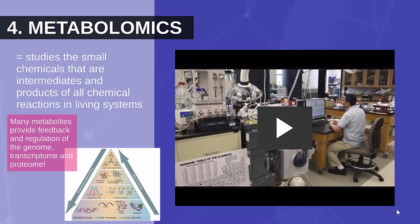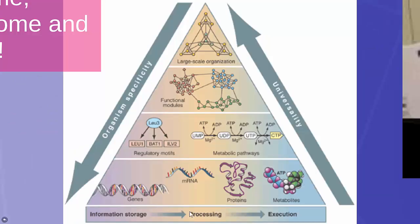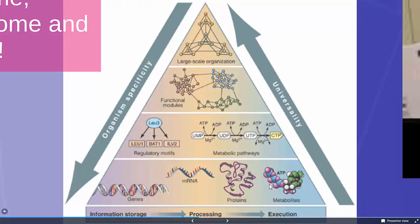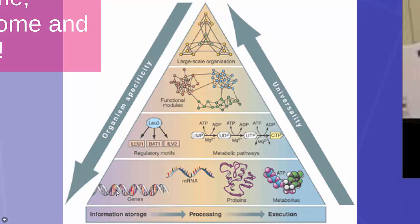Metabolites can be really important in providing feedback and regulation of the genome, transcriptome, and proteome. So you can see how interconnected all of the omics are. It could mean that a metabolite attaches to the DNA and blocks transcription. Or it could be that a metabolite attaches to a protein and helps that protein function better.